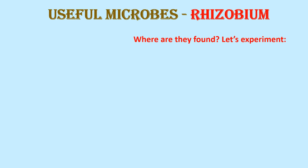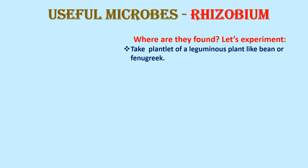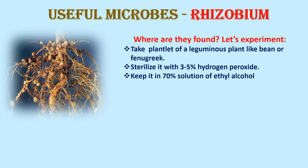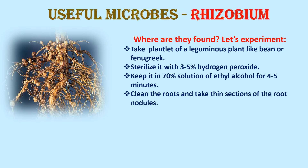Another useful microbe is rhizobium. To find where they are found, take a plantlet of a leguminous plant like bean or fenugreek. Sterilize it with 3–5% hydrogen peroxide, then keep it in a solution of ethyl alcohol for 4–5 minutes. Clean the roots and take thin sections of the root nodules — the round structures found on the roots of leguminous plants such as bean, fenugreek, soybean, and peas.